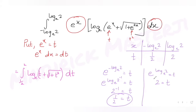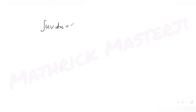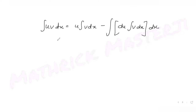To solve this, I use integration by parts. Since there's only one function, I treat it as multiplied by 1. In IBP, I define u = log(t + √(1 + t²)) base e (logarithmic function) and v = 1 (algebraic). The IBP formula is: ∫u·v dt = u·∫v dt − ∫(u' · ∫v dt) dt.